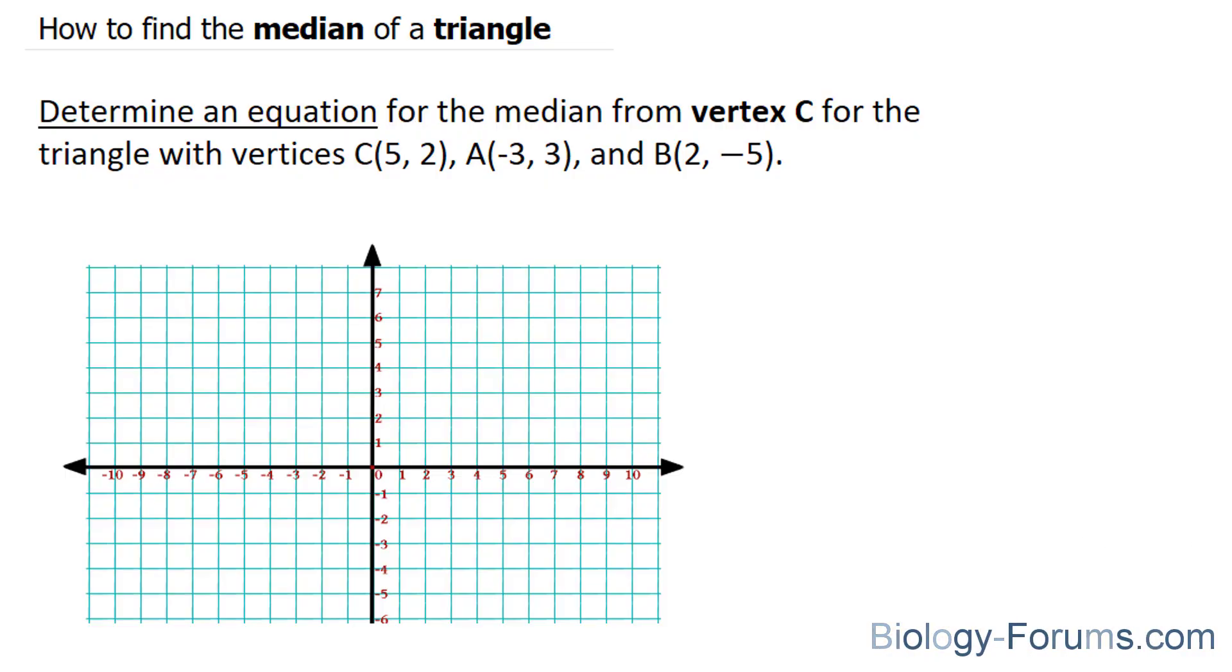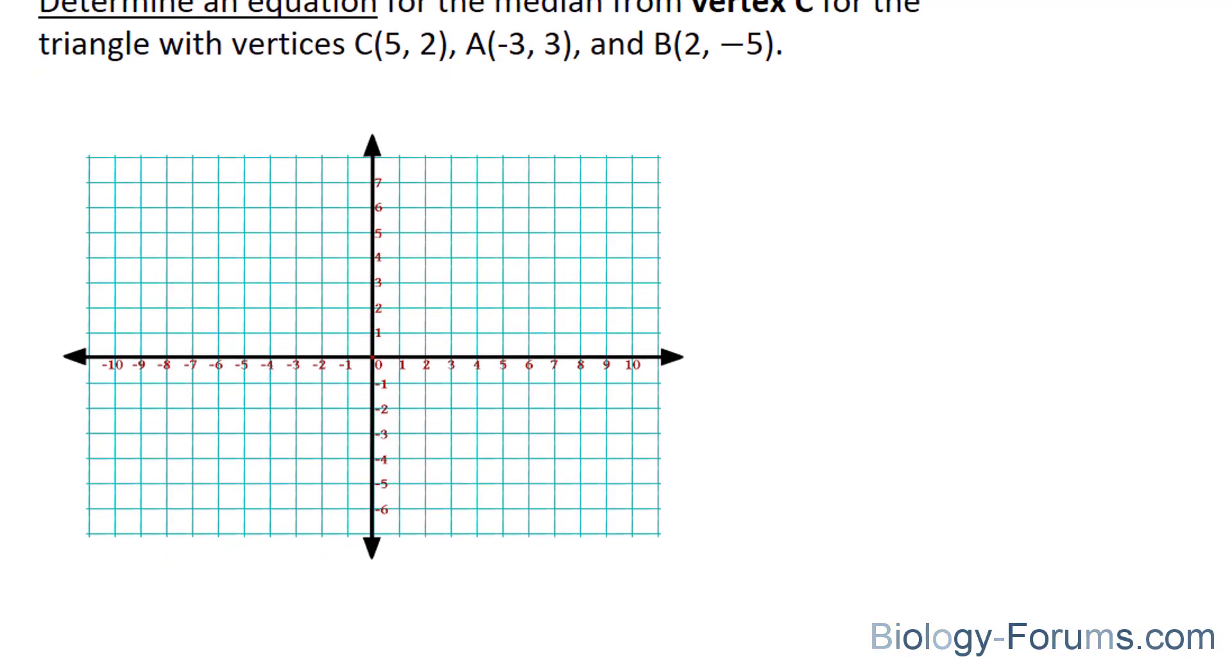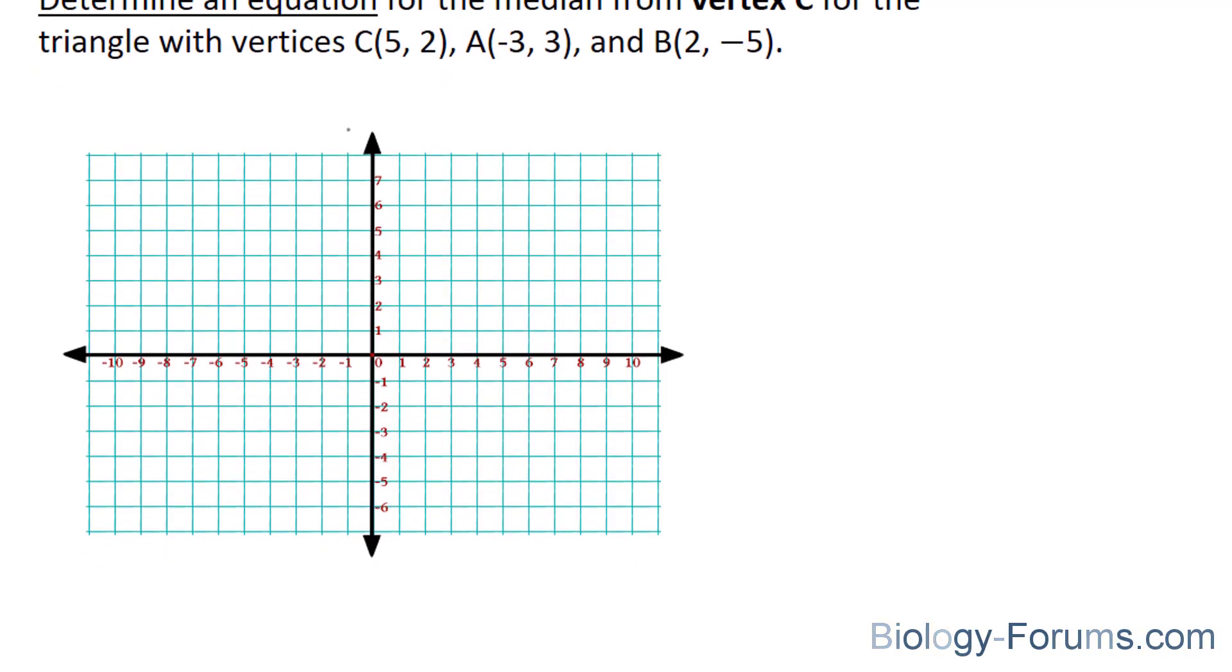The first thing that we will do is plot these points: C, A, and B. We'll start with C. C has the coordinates 5 and 2. A has the coordinates negative 3 and positive 3. And B has the coordinates 2 and negative 5.